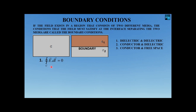E is a conservative vector, so del cross E equals zero. Moreover, E is independent of path, so the closed path integral of E is zero. These are fundamental properties of the electric field.